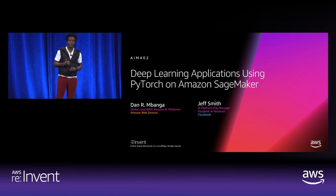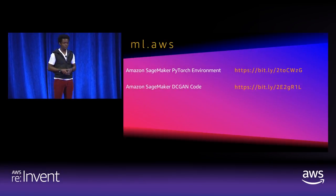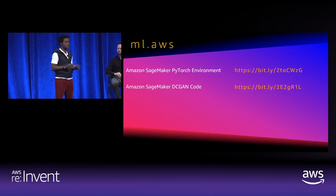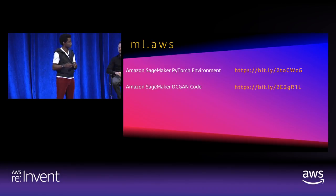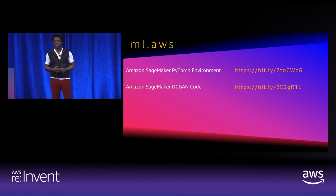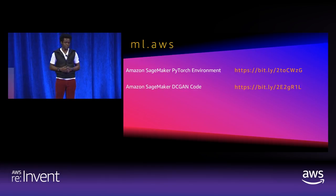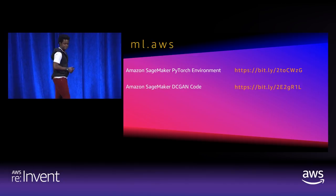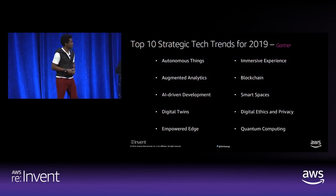Just for a little housekeeping: we will be showing some code, but don't worry about all the details because the code is available on GitHub. What we want to focus on today are the best practices and insights so that you can take those home, with the details available online. This is a 400-level session, so we won't be going through a lot of definitions, but everything is available to read online and the code is heavily documented for your benefit.